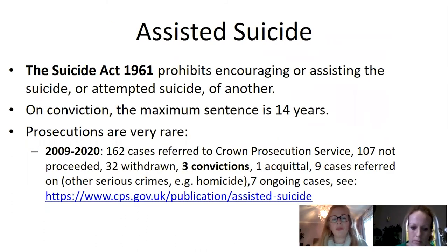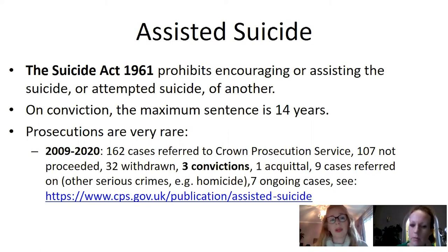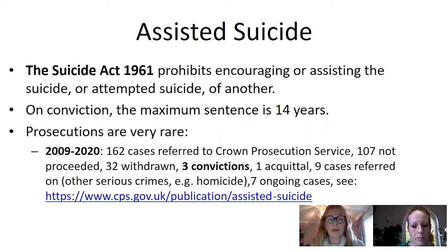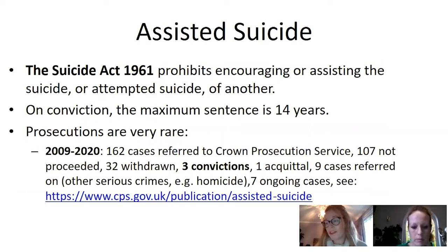Moving on to the law in England, Wales and Northern Ireland on assisted suicide: the Suicide Act 1961 prohibits assisting or encouraging the suicide or attempted suicide of another person. This Act at the time decriminalised attempting to kill oneself, but made it clear that it was an offence to assist in the suicide of another person. On conviction, the maximum sentence is 14 years, but convictions are very rare indeed.